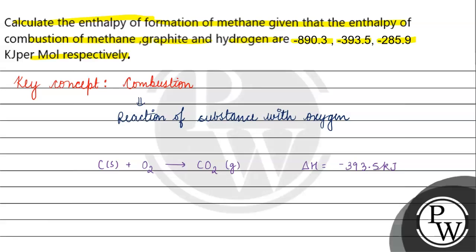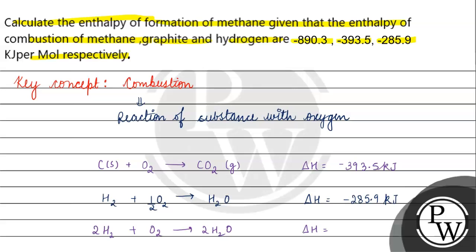Now let's talk about Hydrogen. Hydrogen reacts with oxygen to give water. For two moles of hydrogen, the enthalpy comes out to be minus 571.8 kJ/mol.